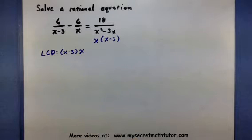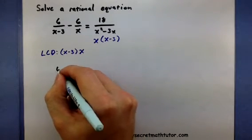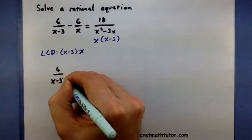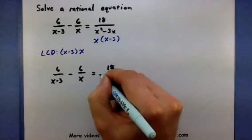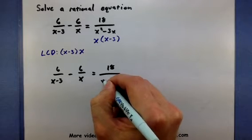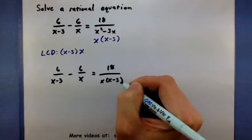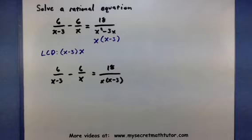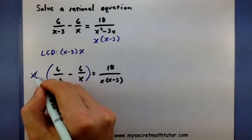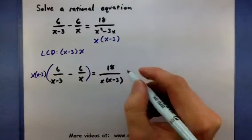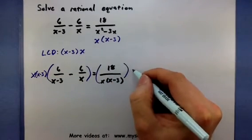Now, I'm going to use this to multiply on both sides and get rid of all of my fractions. So let's see what this is going to do. We'll basically multiply on the left side by an x times an x minus 3, and we'll multiply on the right side.